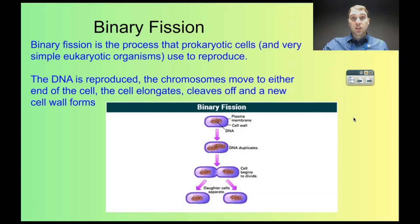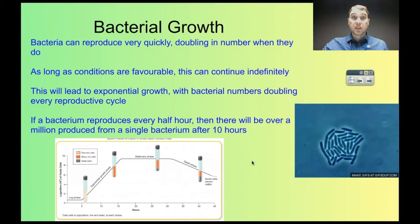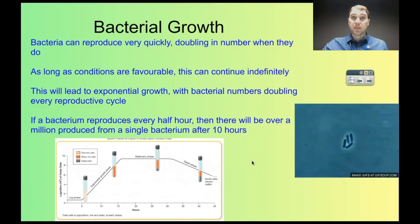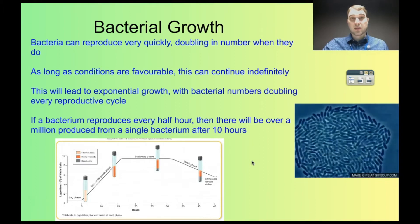We're just going to briefly talk about binary fission because this leads into the next bit. Bacteria can undergo binary fission, which is where they simply divide in two to reproduce. The DNA is reproduced, the cell elongates and then pinches off, and you get two cells from one. Because bacteria double every time they reproduce, and they can do that very quickly, their growth is exponential.